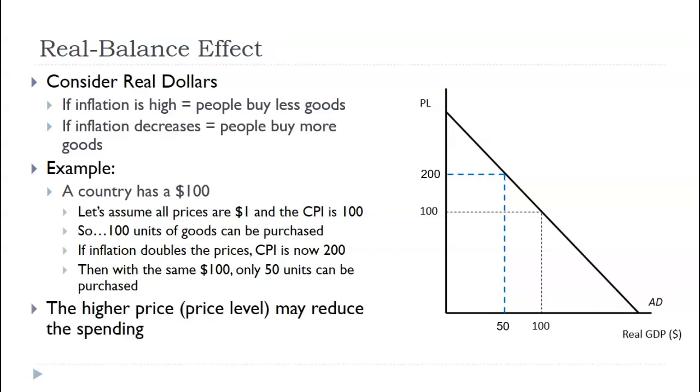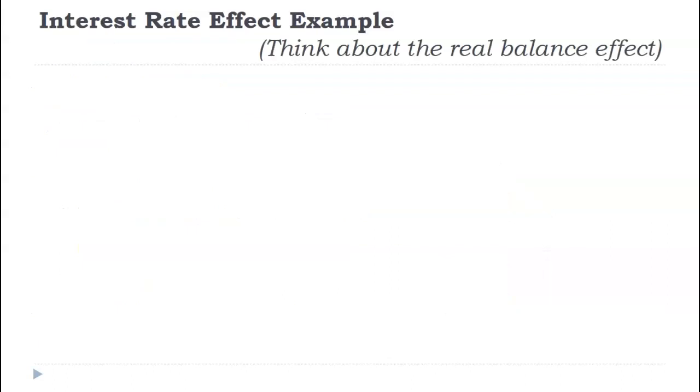But, because of the buying power, they can't buy as much. So, the nominal GDP has not changed. Just the real output has changed. So, the higher the price level may reduce the spending on real output and vice versa. So, that's the real balance. The balance of your bank account adjusts to inflation. That would be the real portion.